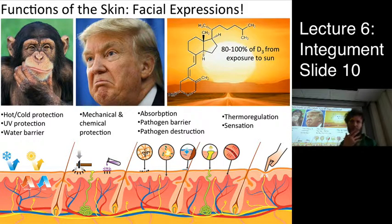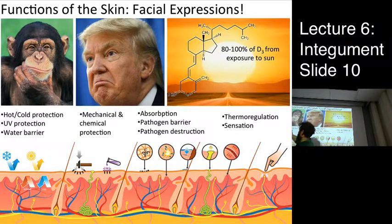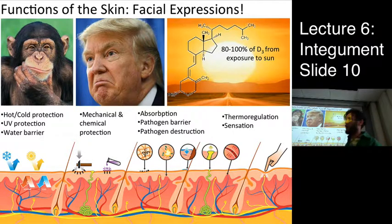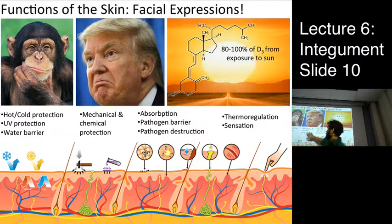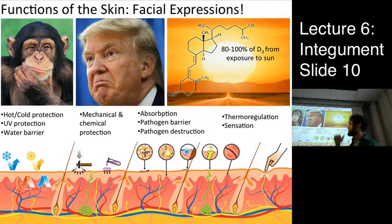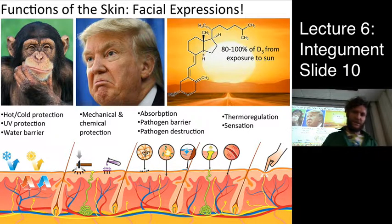What does skin do? A lot. It protects you from hot and cold, UV radiation, and acts as a water barrier to prevent dehydration and the penetration of aqueous toxins or pathogens. It's a mechanical and chemical protectant against pathogens. It provides thermoregulation and sensory information, is the source of vitamin D3 in the body, and gives us the ability to express facial expressions and emotions.